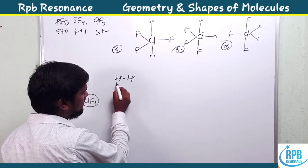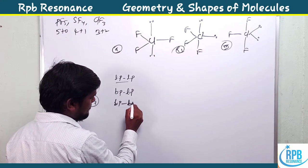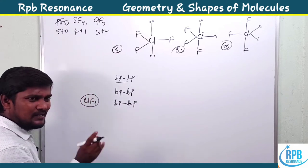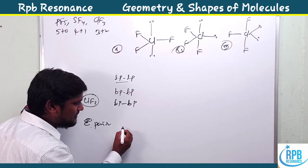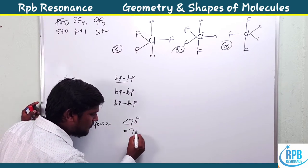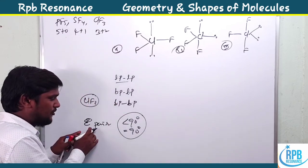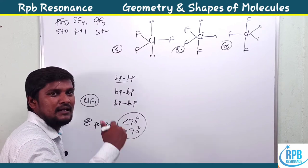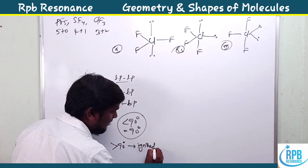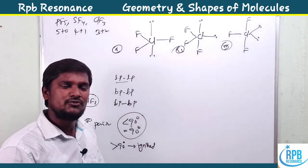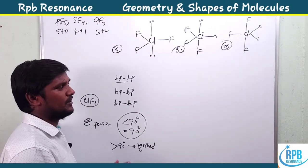Electron pair repulsions are only observed at 90 degrees or less than 90 degrees. If the bond angle is more than 90 degrees, those repulsions are ignored. For the trigonal bipyramidal geometry, repulsions greater than 90 degrees - such as 120 degrees or 180 degrees - are negligible. Only repulsions at or below 90 degrees count when determining the correct structure.